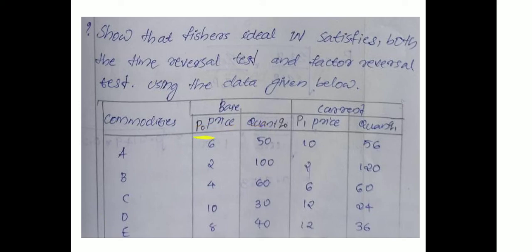The commodities are A, B, C, D, E. Base year prices P0 are: 6, 2, 4, 10, 8. Base year quantities Q0 are: 50, 100, 60, 30, 40. The corresponding current year prices P1 are: 10, 2, 6, 12, 12. Current year quantities Q1 are: 56, 120, 60, 24, 36.